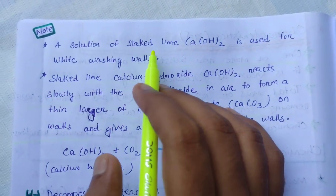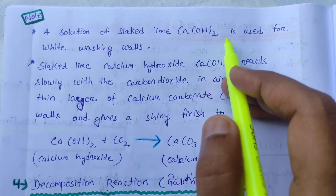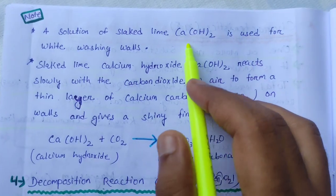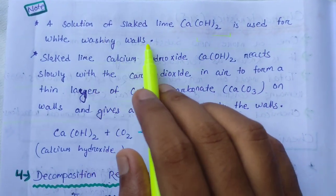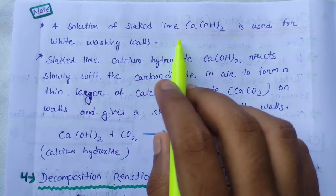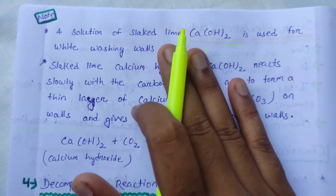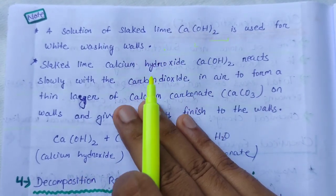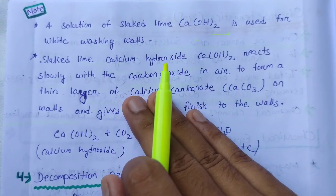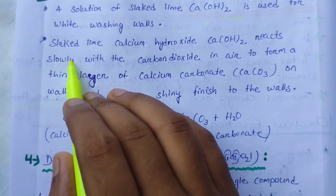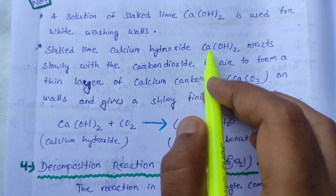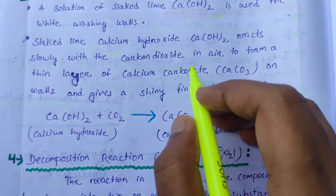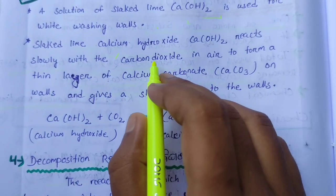An important note: a solution of slaked lime, Ca(OH)₂, is used for white washing walls. The color of Ca(OH)₂ is white, which is why it is used for white washing walls.